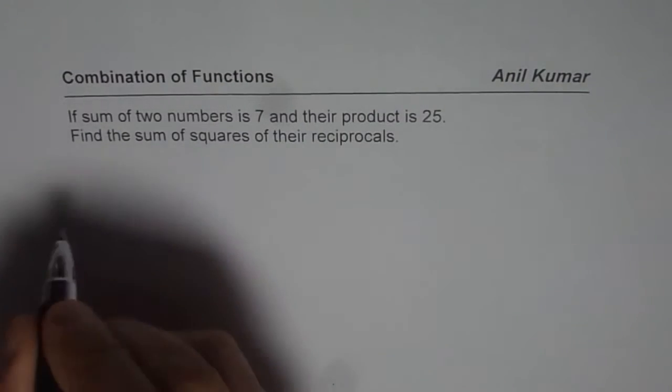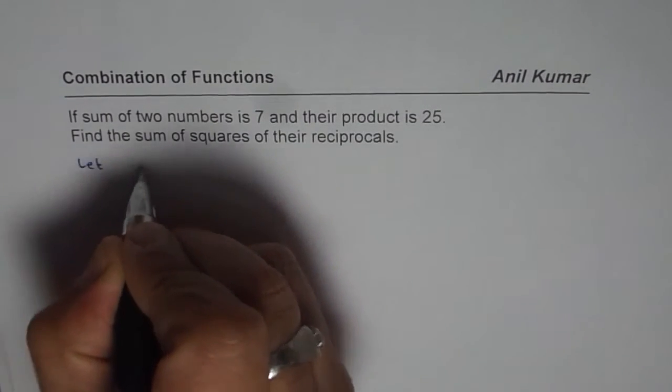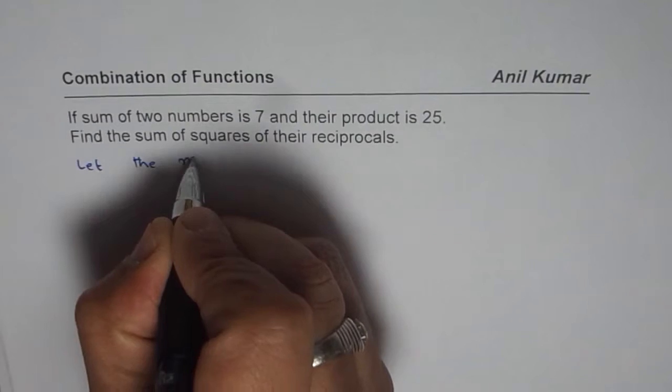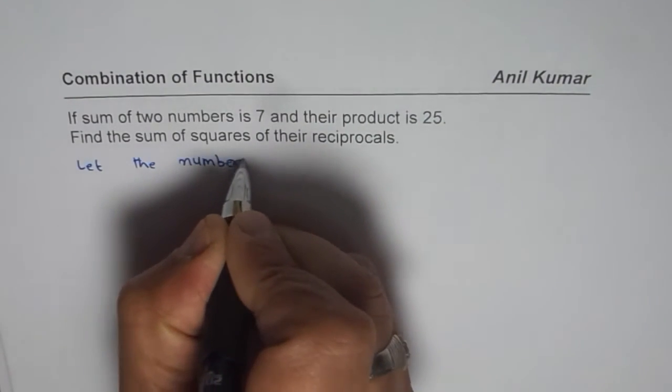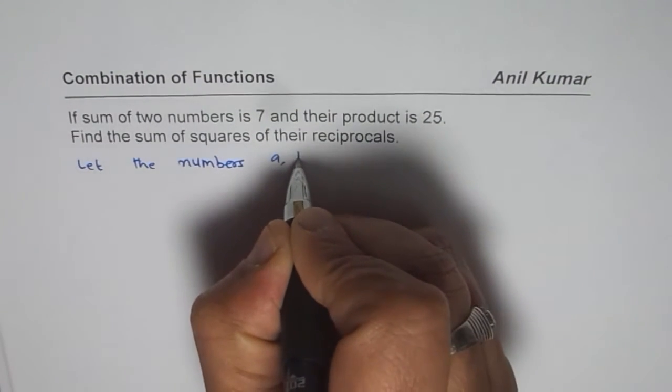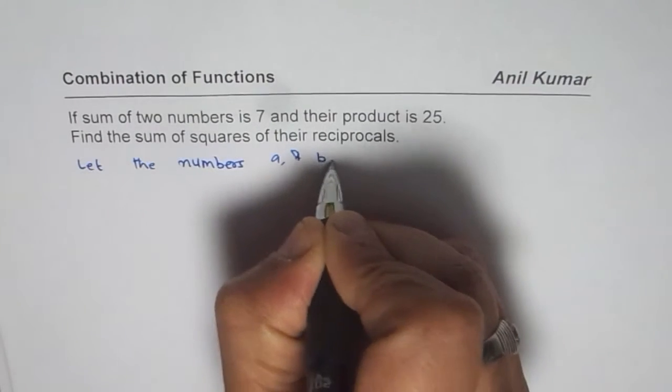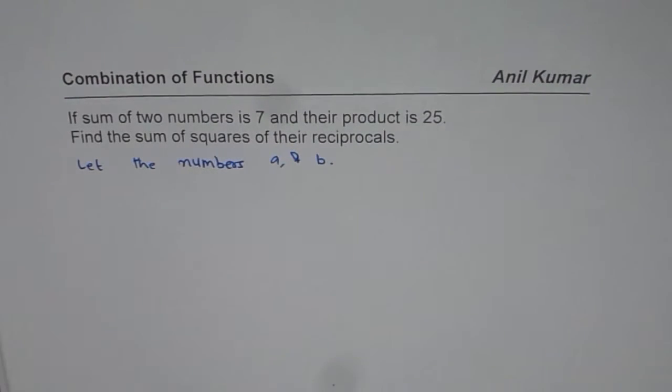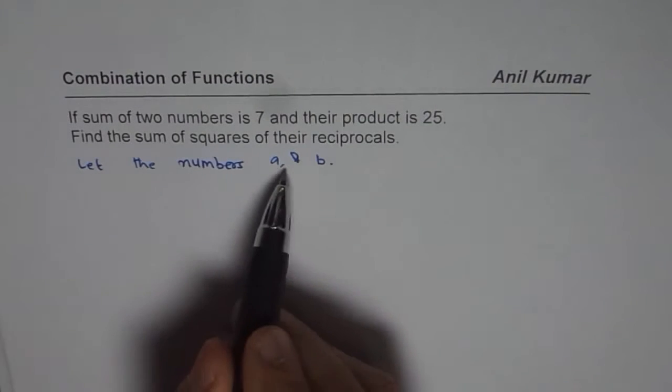So we are given two numbers. Let the numbers be A and B. We had a similar example in another video also, so we are taking very simple cases. This is a step-by-step approach to understand something which is kind of complicated.